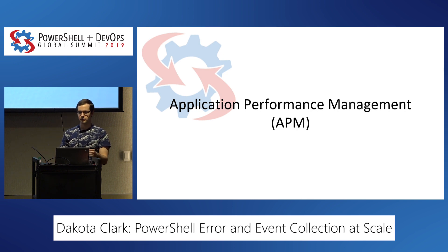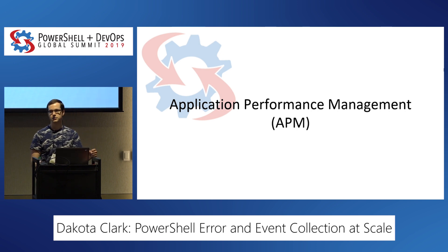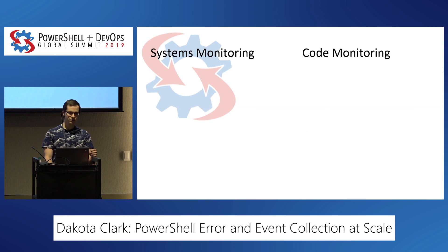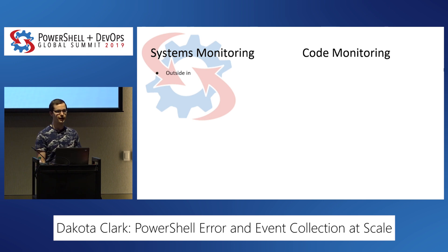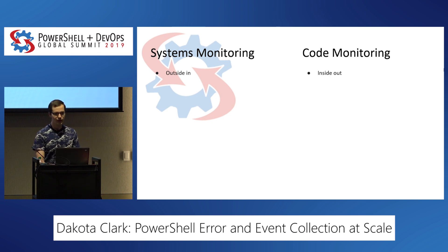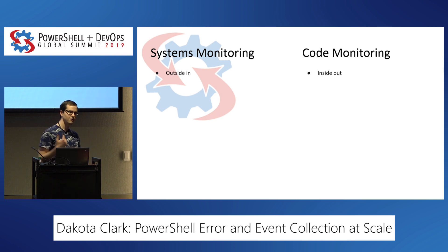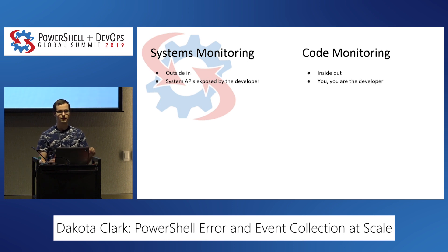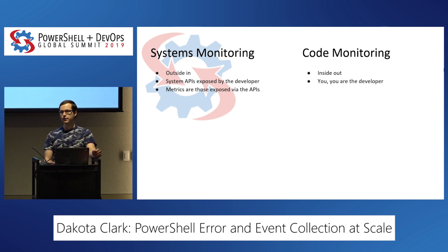There's something called Application Performance Management, or APM. This is something developers commonly use to track performance and the different actions their code takes as it executes. Comparing traditional systems monitoring to code monitoring: systems monitoring is outside-in, meaning you ask Windows how much CPU is being used and it returns a value. Code monitoring is inside-out - you determine when something is sent, when a metric is logged, when an event is tracked. With systems monitoring, you're limited to the APIs exposed by the developer.